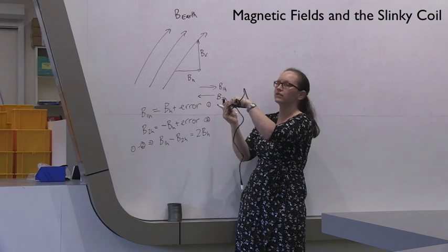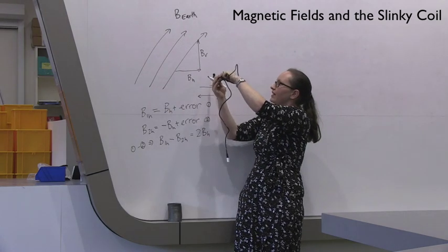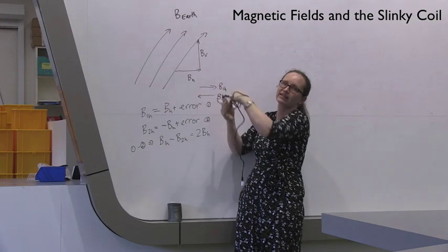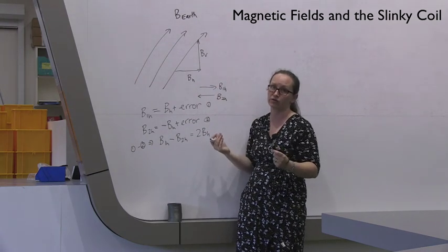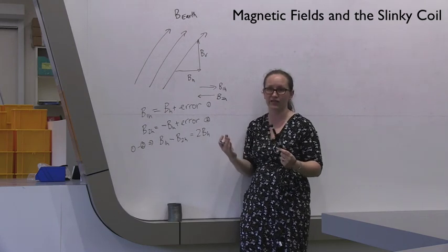To get the vertical, I need to hold the probe vertically. I need to take a measurement up like that and the measurement down like that and again, subtract them from each other and divide by 2. So that's how you're going to approach the first part of the experiment.